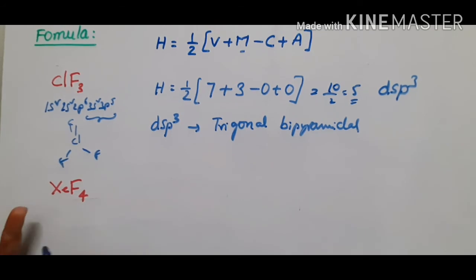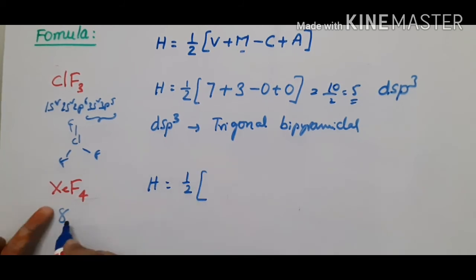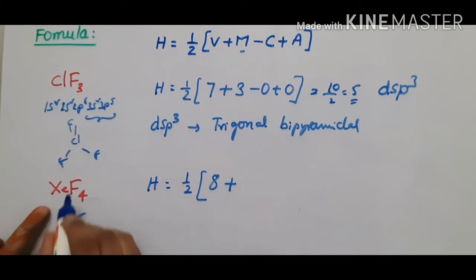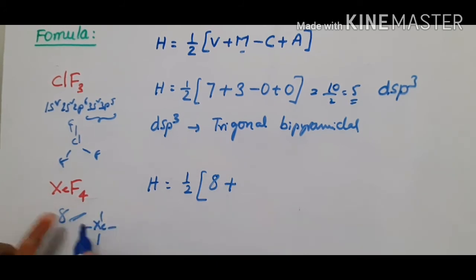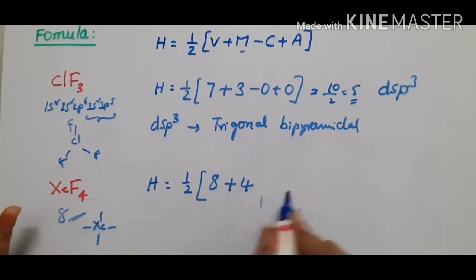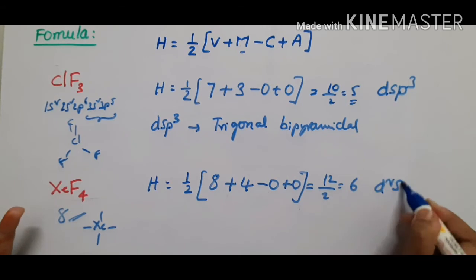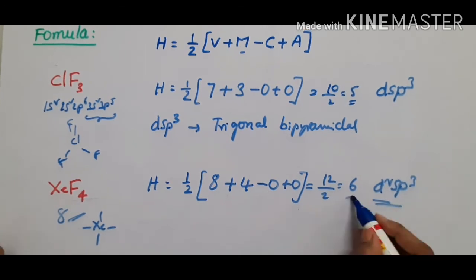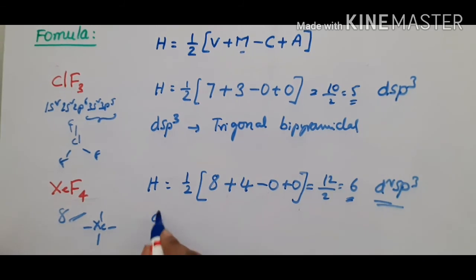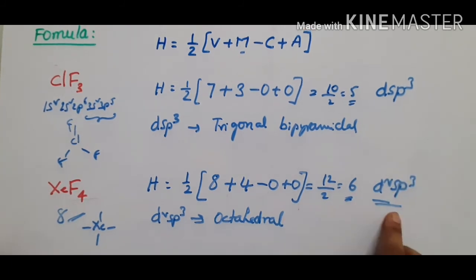The last neutral molecule example is XeF₄, xenon tetrafluoride. Xenon is a noble gas, so its valence electron count is 8. H = ½(8 + 4 - 0 + 0) = 12/2 = 6. There are four monovalent F atoms attached to the central xenon atom. H = 6 gives d2sp3 hybridization, and the predicted geometry is octahedral.